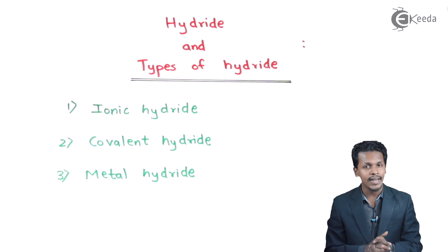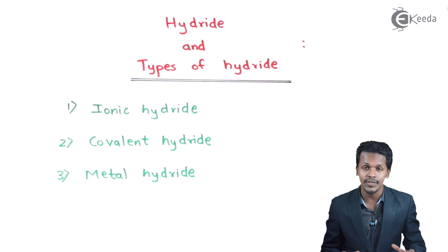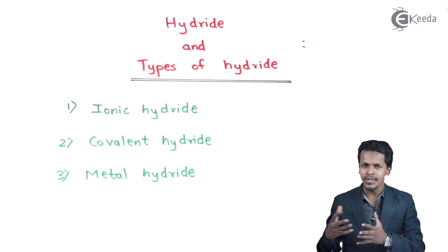Talking about covalent hydride - for example, CH4 or NH3. In these cases, hydrogen is combining with p-block elements like carbon and nitrogen to form the hydride of carbon and the hydride of nitrogen respectively.